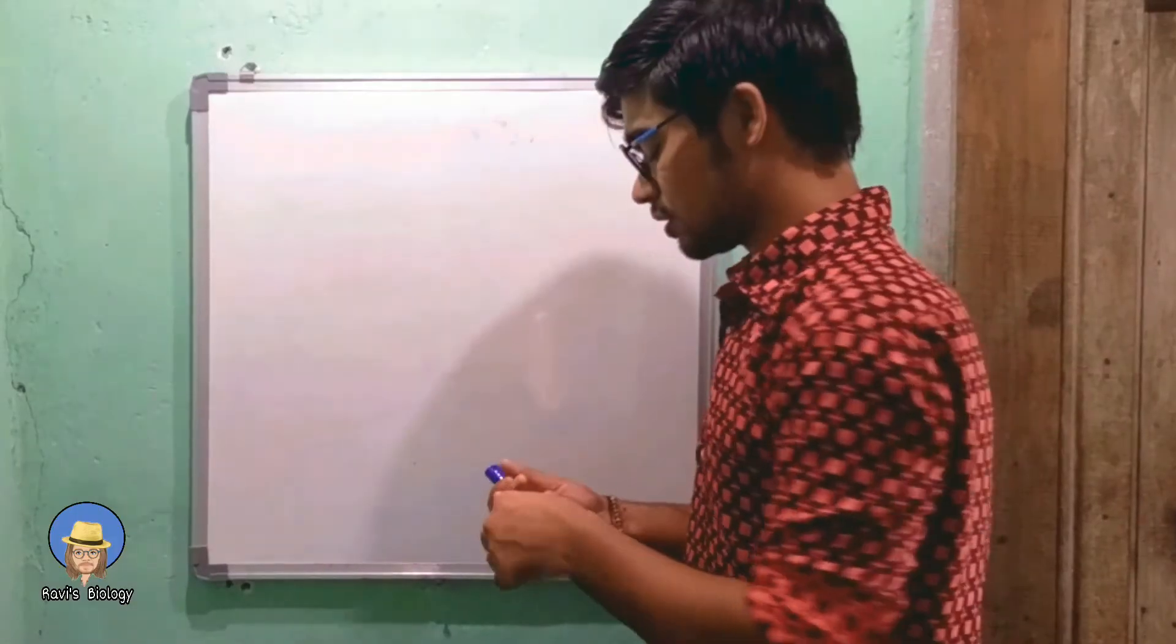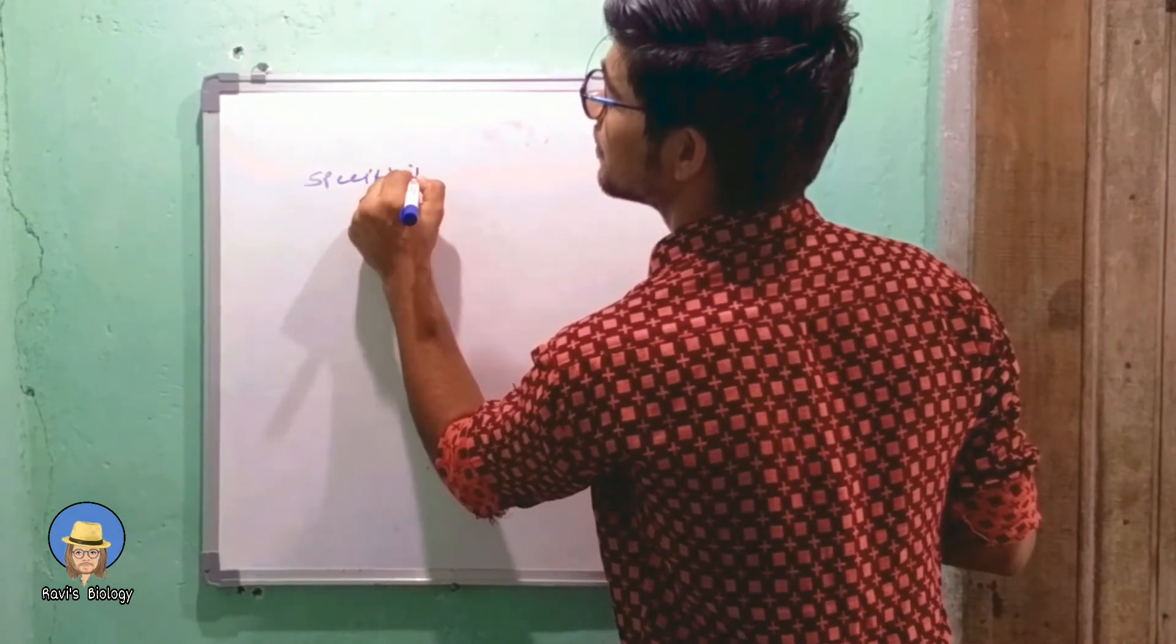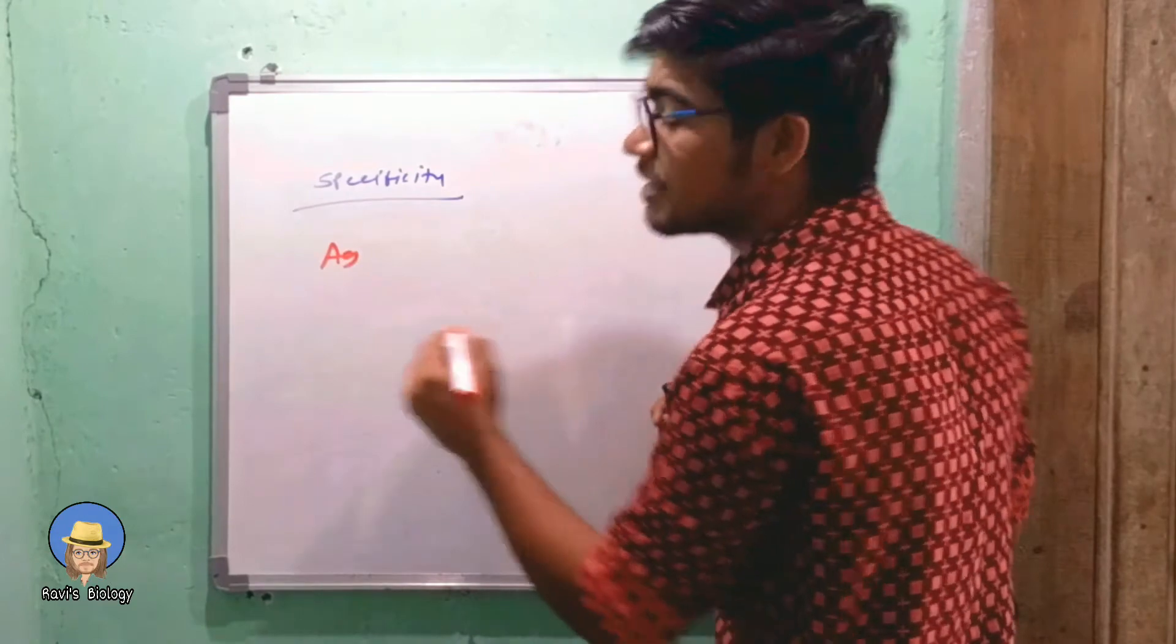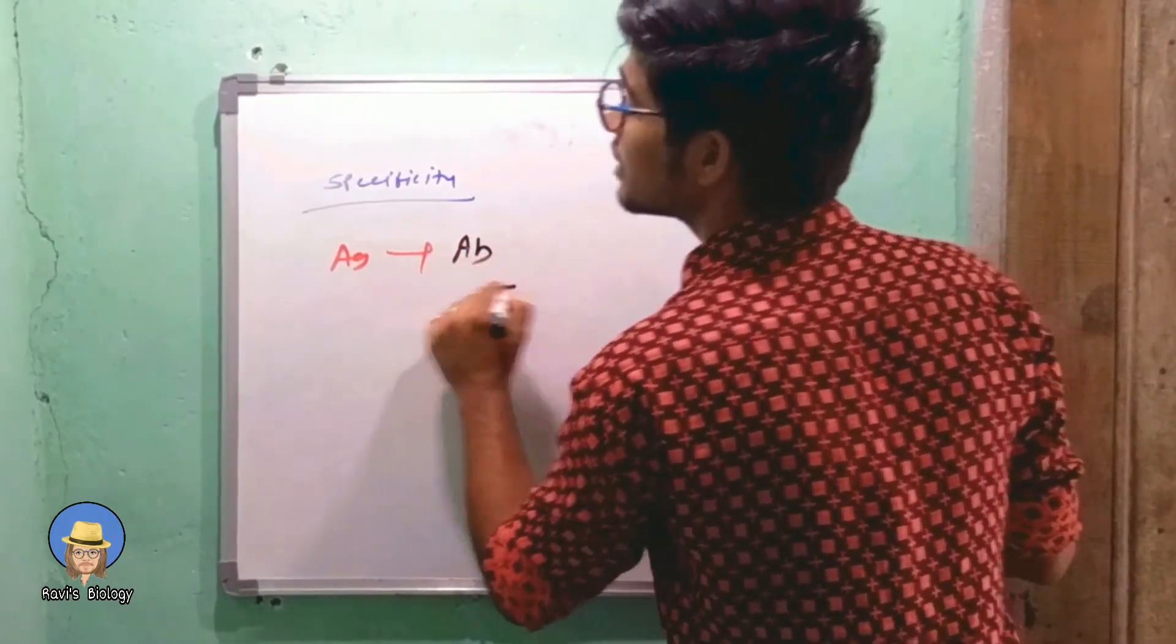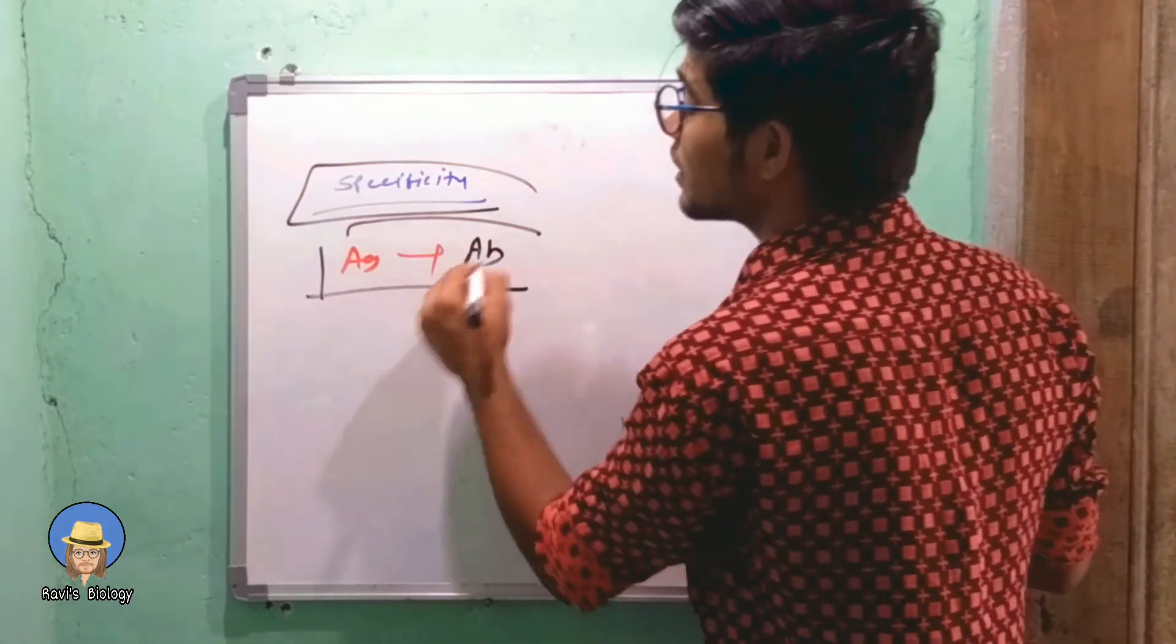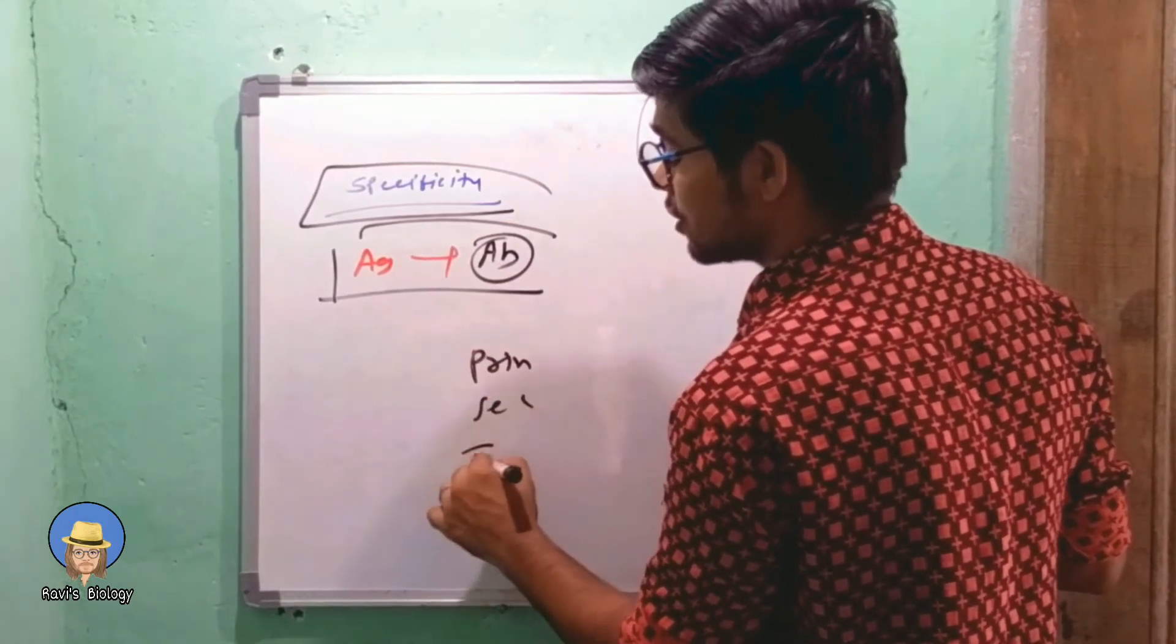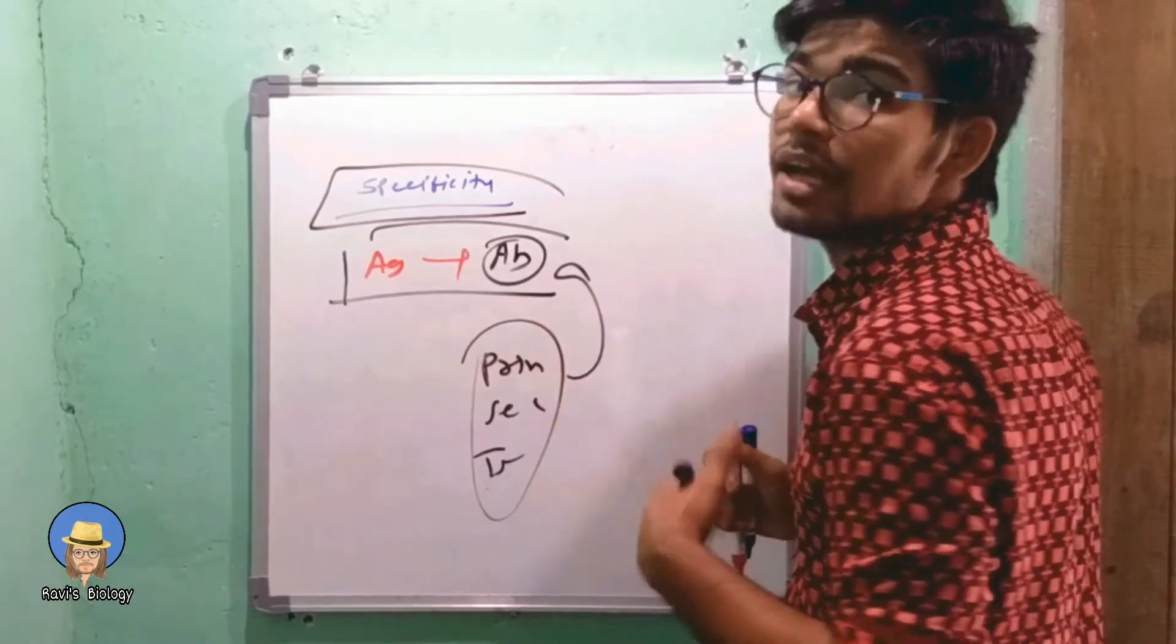The fourth feature is specificity. A specific type of antigen binds with a specific type of antibody. It is called specificity. Antigen has ability to recognize different structures like primary, secondary, and tertiary stages of the antibody, so the specificity is very high.